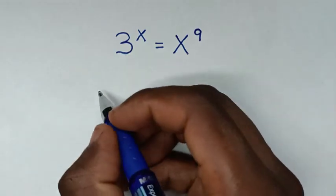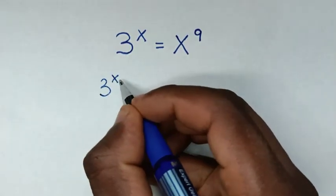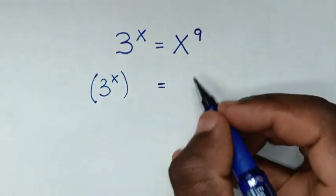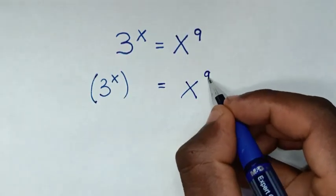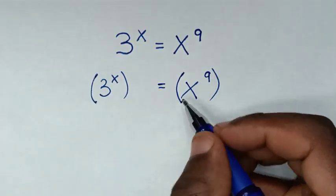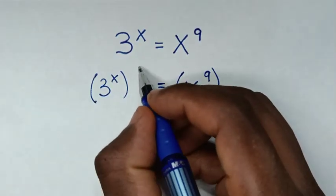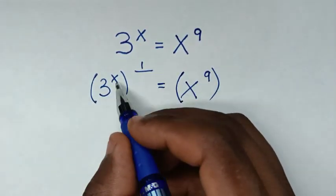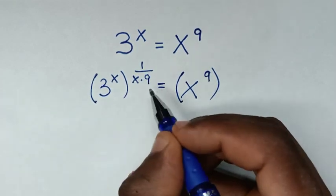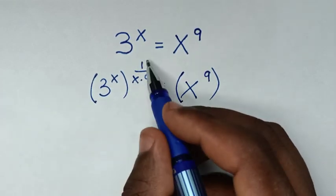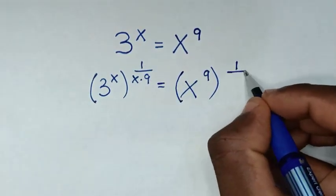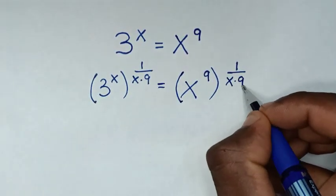From here, for 3 to the power of x, we take it inside the bracket. This is equal to x to the power of 9, which we also take inside the bracket. Then we multiply by the power of 1 over x times 9, and because we multiply by this power, we also multiply by the same power 1 over x times 9 on the other side.